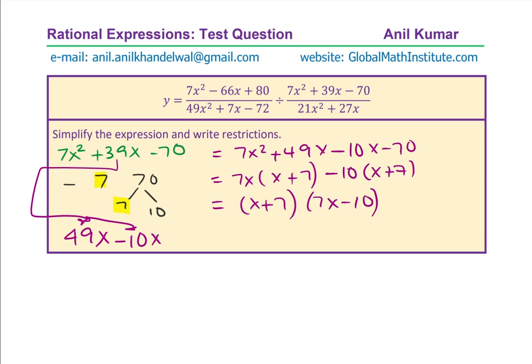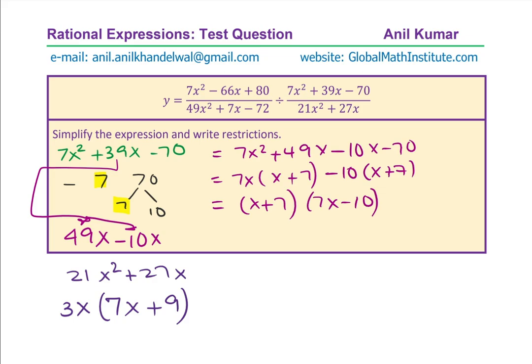Now let's look into the denominator of the second fraction, which is 21x squared plus 27x. There is a typing error here, but we can take 3x common: 3 goes into 21 seven times and 3 goes into 27 nine times. So we get 3x times 7x plus 9. So we have factored the denominator as well. We have now factored each and every part.